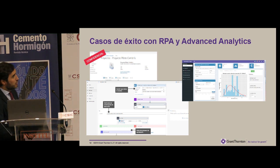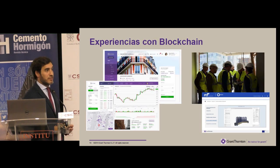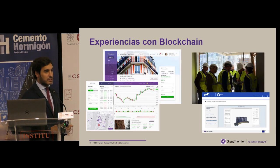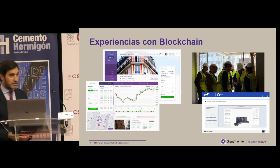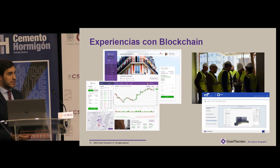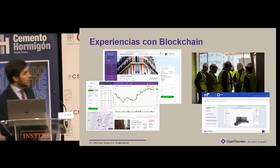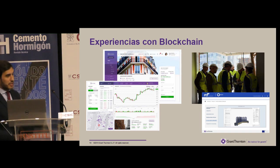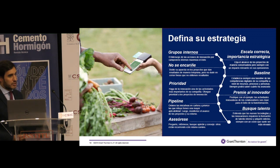Las experiencias con blockchain nos permiten certificar, como es el caso de la derecha, hacer una certificación de control de ejecución mediante blockchain. Y en el caso de la izquierda, tokenizar activos para poder hacer transacciones mucho más rápidas, eficientes y fiables. Para tener una estrategia de digitalización, lo único que hay que hacer es definirla con un itinerario y abordar los pasos para poder abordar esta transformación digital.